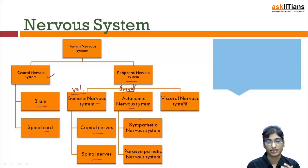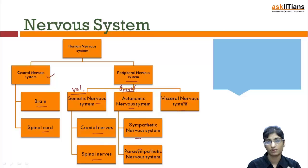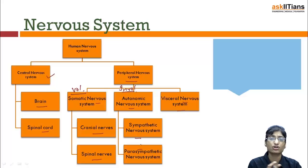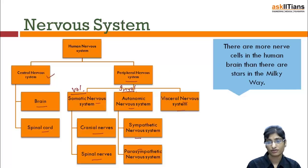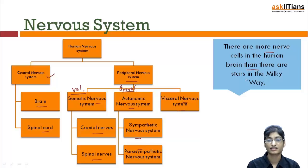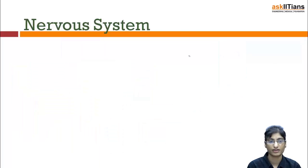The autonomic nervous system is of two types: sympathetic and parasympathetic — they act in opposition to each other. They are not completely opposite, but they act in a coordinated way to maintain balance. An interesting fact: there are more nerves in the human brain than there are stars in the Milky Way.